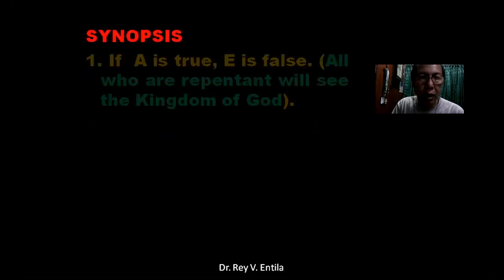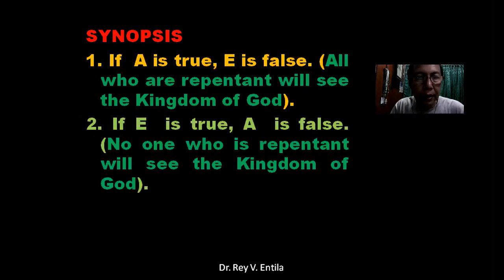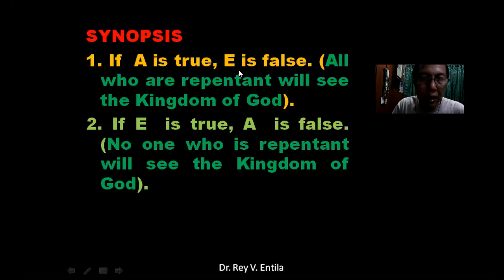Synopsis: if A is true, E is false — 'All who are repentant will see the kingdom of God.' If E is true, A is false — 'No one who is repentant will see the kingdom of God.' So it's either: if A is true, E is false; if E is true, A is false.